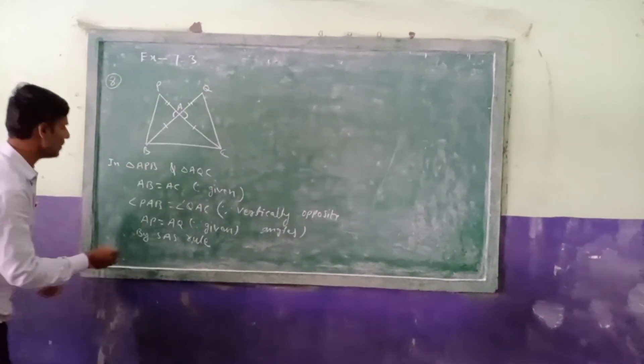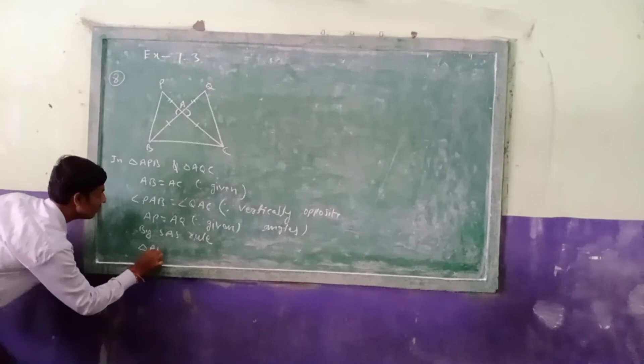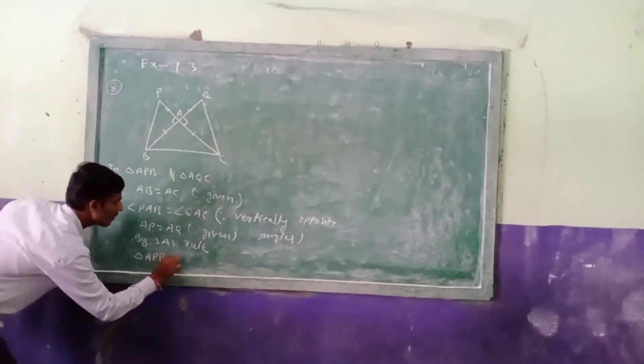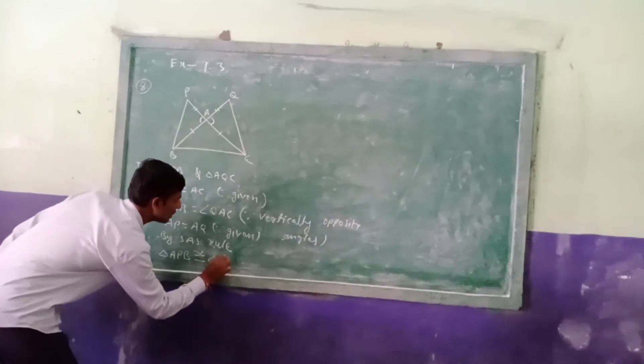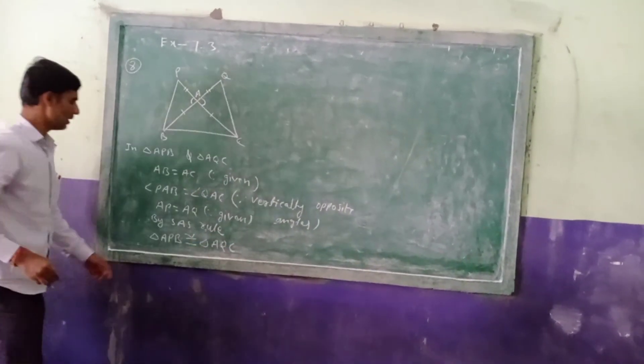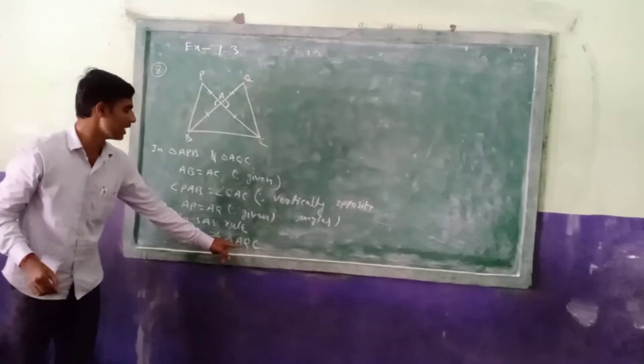We can conclude that triangle APB congruent to triangle AQC.